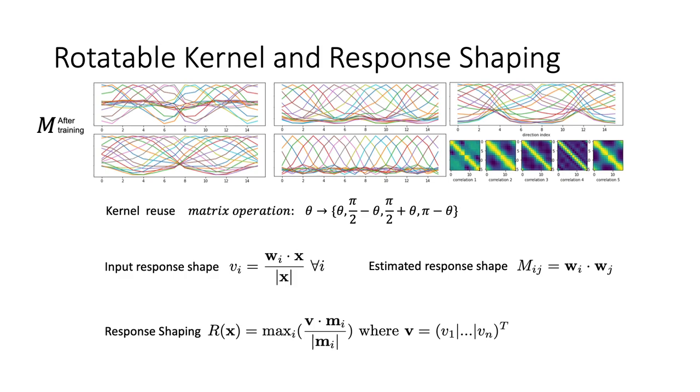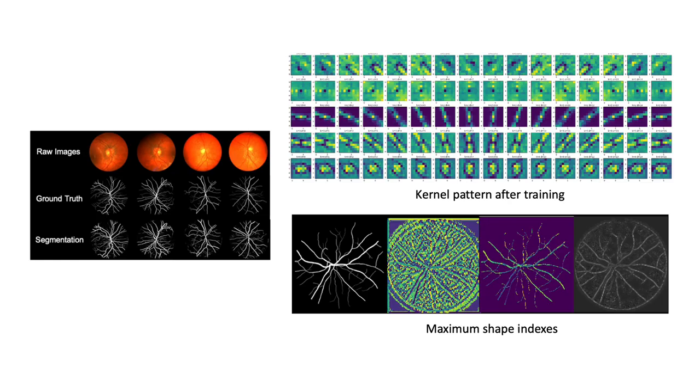We tested our method on a segmentation task, where the model performs well, and the rotational relationship is maintained with pattern evolution. From the index map of response shape, we can see that for an input pattern on a specific direction, the trace of directional kernel is also constant.